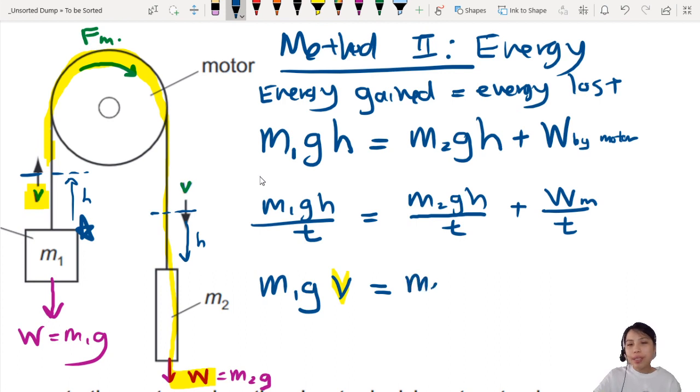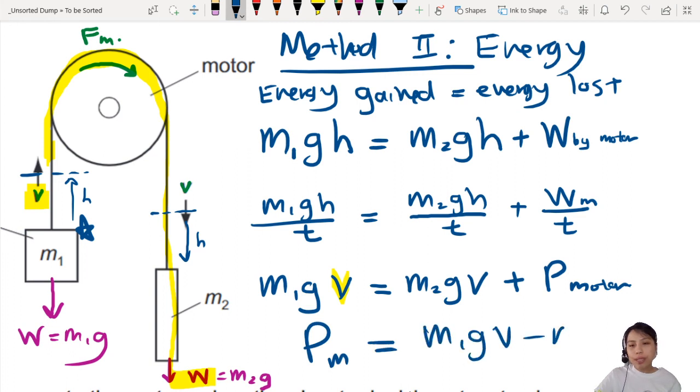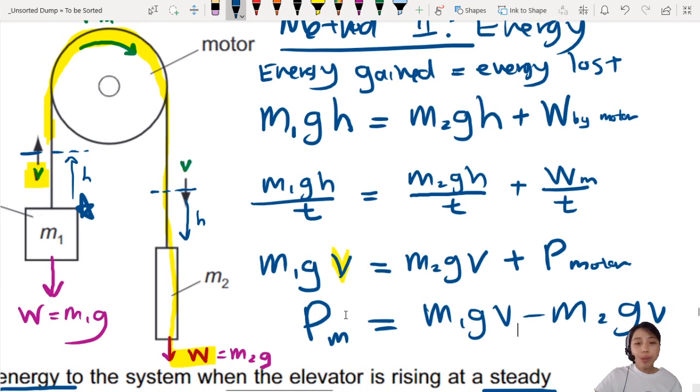Plus, work divided by time is power. So power of the motor. Do a bit of rearranging. Very nice. So you have PM equals to M1gV minus M2gV. And if you factorize them, you get the answer. So M1 minus M2 times GV. Done. You have the answer.